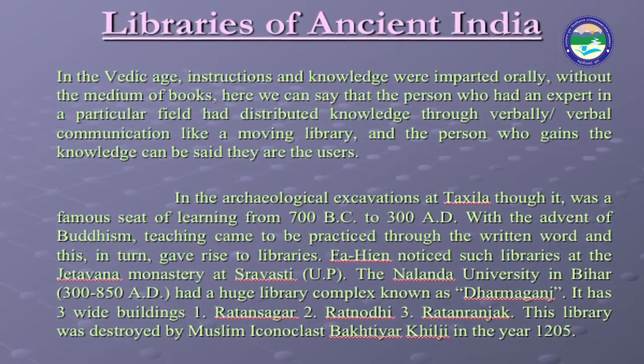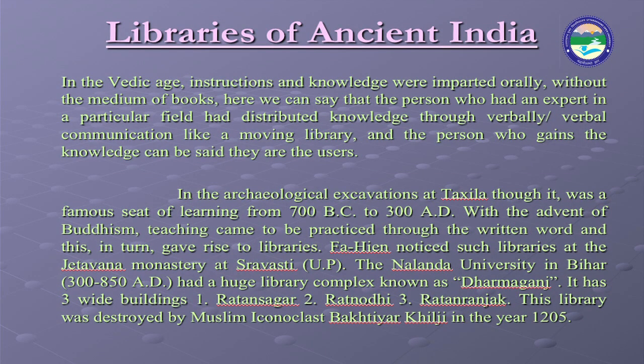With the advent of Buddhism, teaching came to be practiced through the written word, which gave rise to libraries. Fahyan noticed such libraries at the Jetvana Monastery situated in Shravasti in UP, and at Nalanda University in Bihar. Nalanda had a huge library complex known as Dharmganj, consisting of three buildings: Ratna Sagar, Ratnodadhi, and Ratna Ranjaka. This library was destroyed by the Muslim iconoclast Bakhtiyar Khilji in the year 1205.